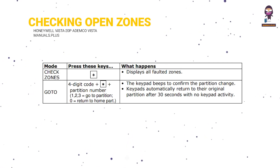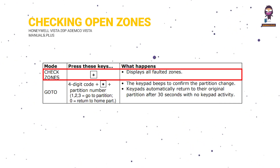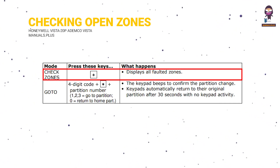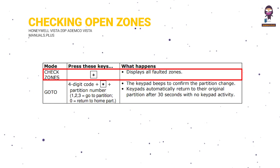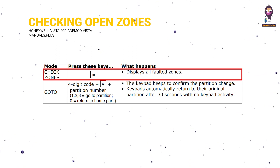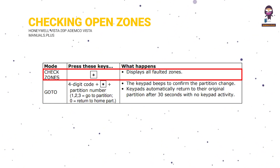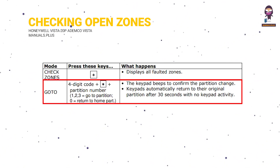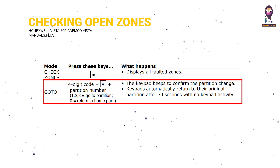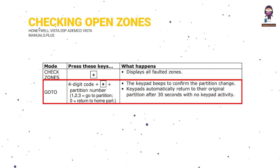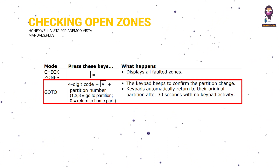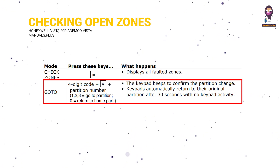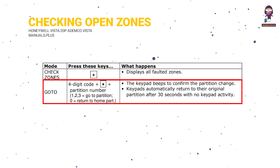Checking open zones. Before arming your system, all protected doors, windows, and other detection zones must be closed or bypassed; otherwise, the keypad display is not ready. Goto: if the user is authorized, a keypad in one partition can be used to perform system functions in the other partition by using the Goto command. Must use an alpha keypad.